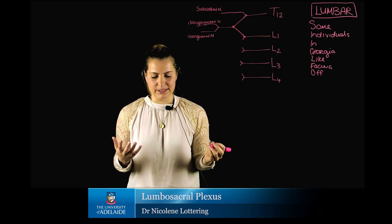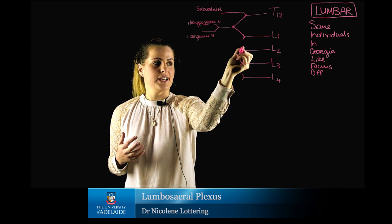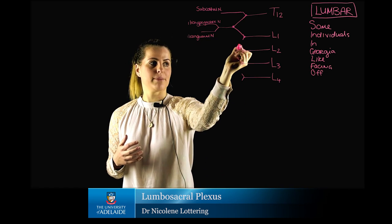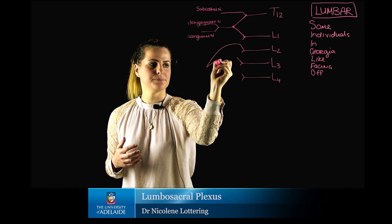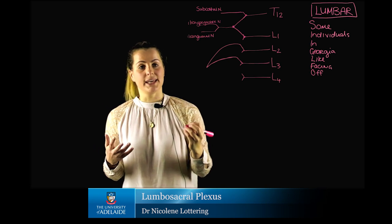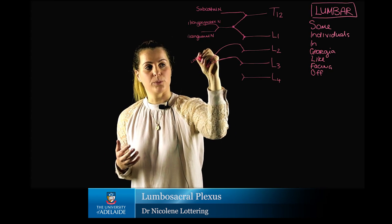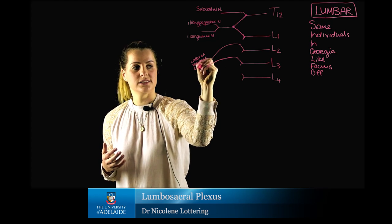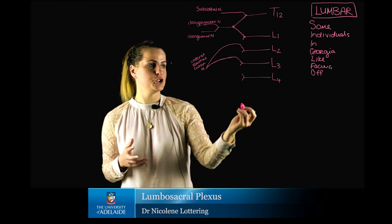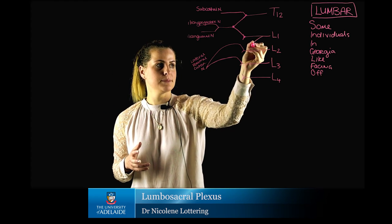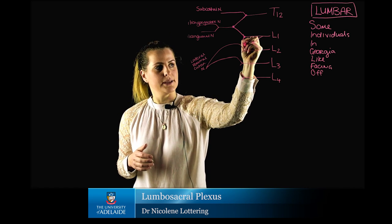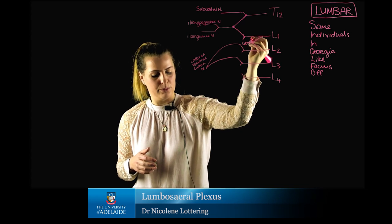From the ventral rami associated with L2 and L3, grouped together, the main peripheral nerve formed is going to be our lateral femoral cutaneous nerve. We have also missed 'Georgia' — Georgia is going to form from a junction between L1 and L2, and this is going to be our genitofemoral nerve.